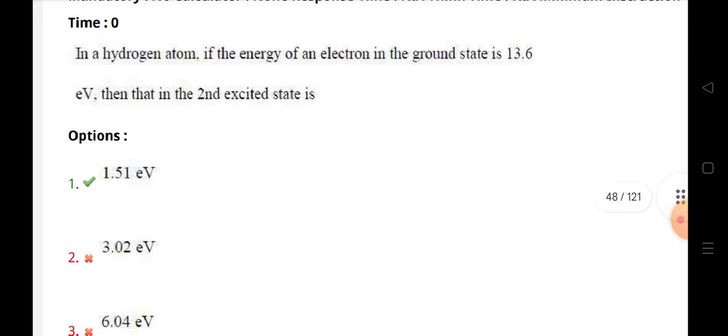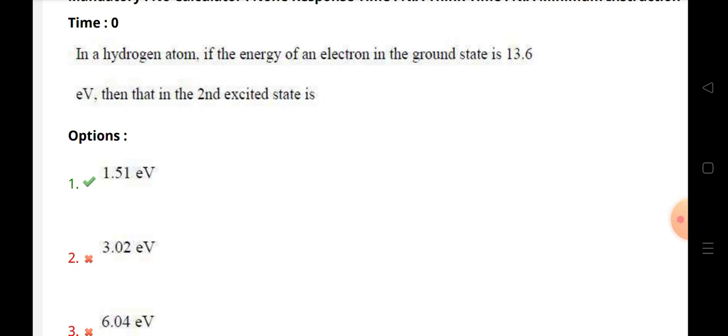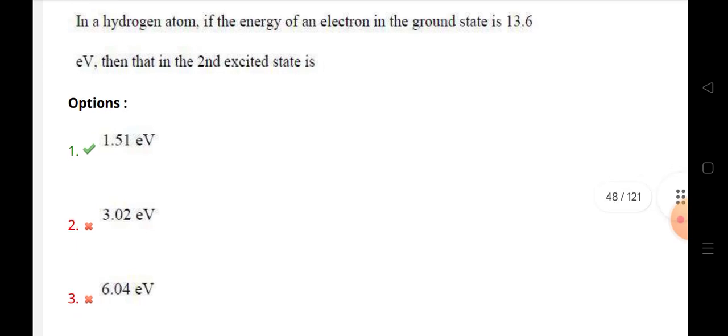In a hydrogen atom, if the energy of an electron in the ground state is 13.6 eV, then that in the second excited state is—the answer is 1.51 eV.